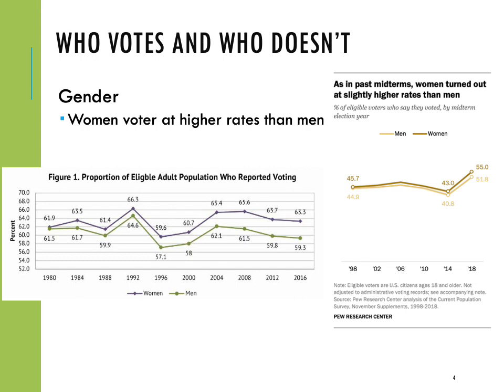The next aspect we'll look at is gender. In figure one, we have the percentage that vote by year of election. The purple line represents women, while the green line represents men. We can see pretty consistently over time that women vote at higher rates than men. Going back to 1980, there was no distinguishable difference. However, as the lines diverge, we see a gap in voter turnout. Since about 1996, that gap has been fairly consistent — for example, in 2016, 59.3% of men voted compared to 63.3% of women, suggesting that women vote about 4% more than men on average.